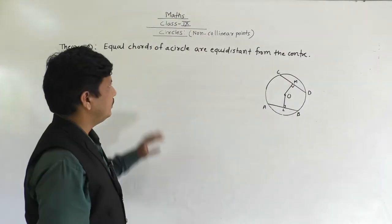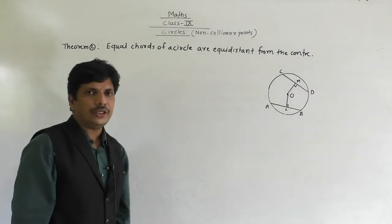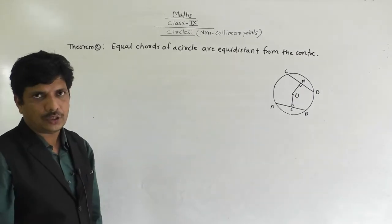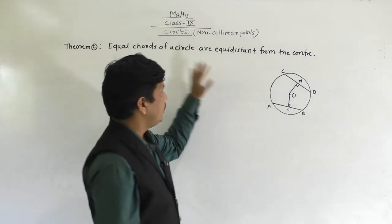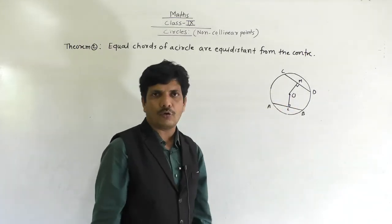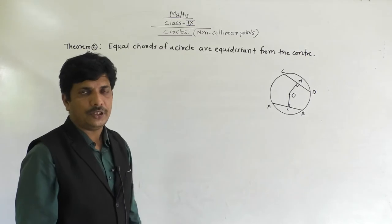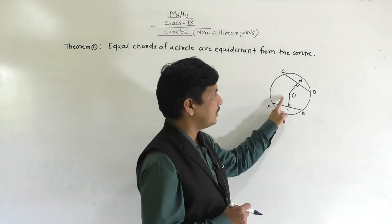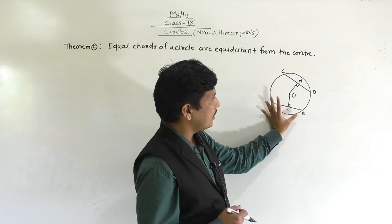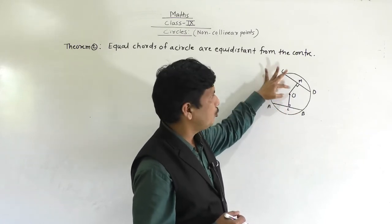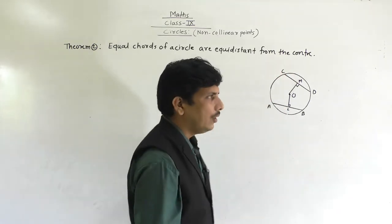Our second theorem is: equal chords of a circle are equidistant from the center. From the figure, we have to prove that the two chords are equidistant from the center — meaning we need to prove that OM equals OL. That is our target.